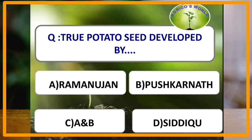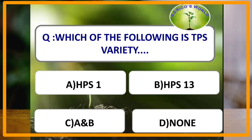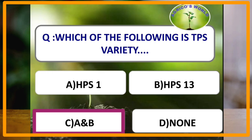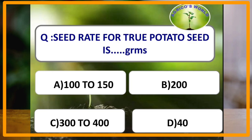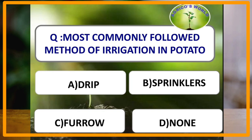True potato seed was developed by the scientist Ramanujan. The true potato seed varieties are HPS-1 and HPS-13. The seed rate for true potato seed is 100 to 150 grams.